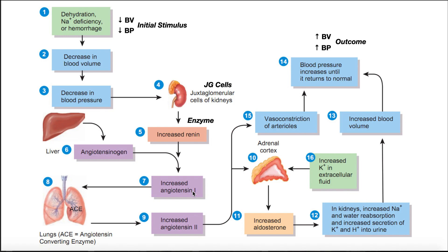Circulating in the blood, angiotensin 1 eventually reaches the lungs, because blood flow goes through the lungs. There's an enzyme in the lungs called ACE — angiotensin converting enzyme. You might have heard of an ACE inhibitor, which is a drug that inhibits this enzyme. When angiotensin 1 gets to the lungs, ACE converts it into angiotensin 2.